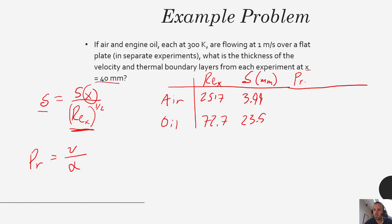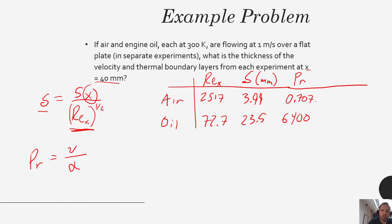The Prandtl number for air is 0.707, and for oil it is 6400. This tells us that relative to its momentum diffusivity, air is going to have an approximately equivalent thermal diffusivity. Whereas for oil, the momentum diffusivity is much much larger relative to its thermal diffusivity. So that will affect the thermal boundary layer thicknesses.